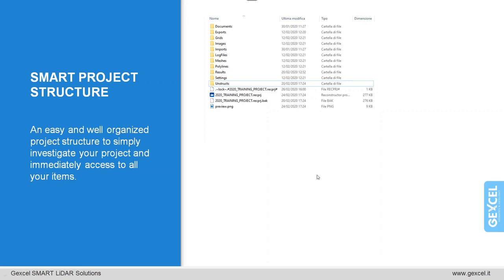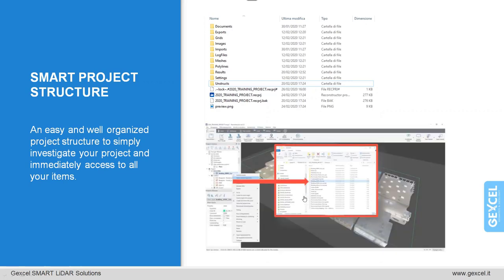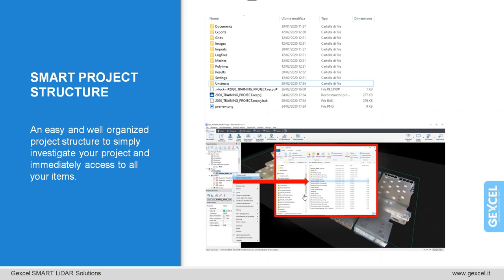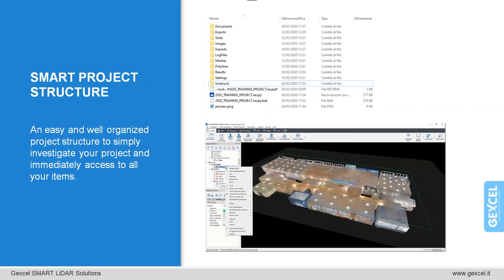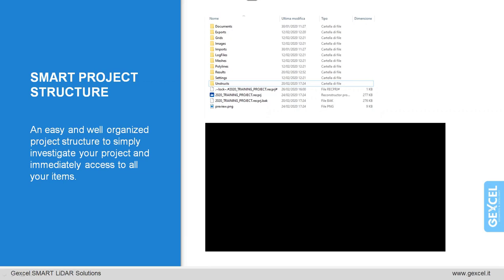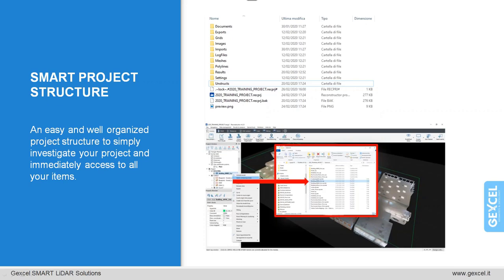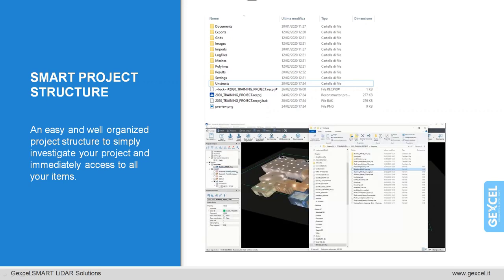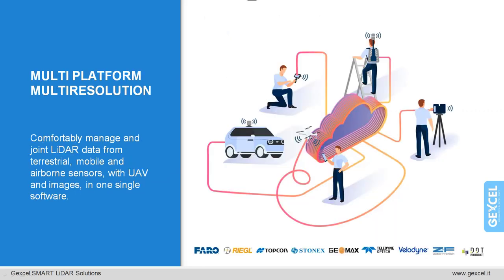While working inside the software with many imported items, if you want to know where an object has been saved, just select an object — for example a point cloud — press the right mouse button and select 'Open Containing Folder,' and the object will be underlined. This clever structure boosts user confidence and ease of use. Reconstructor can import data from different source types including TLS, UAV, mobile mapping systems, and handheld portable mobile mapping systems.